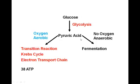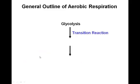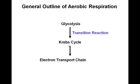From glycolysis, we've broken down glucose to achieve pyruvic acid. Now let's cover the aerobic respiration arm, where the pyruvic acid undergoes a transition reaction, followed by the Krebs cycle, and then the electron transport chain. You should be familiar with this sequence and be able to remember these four different steps in their correct order.